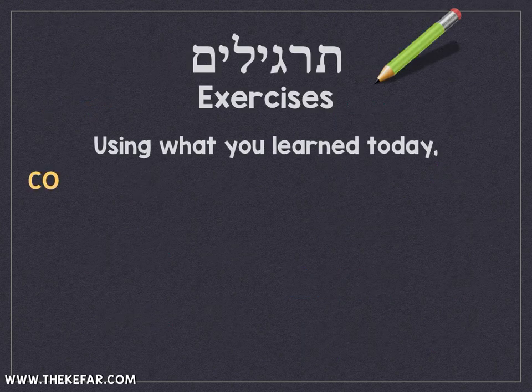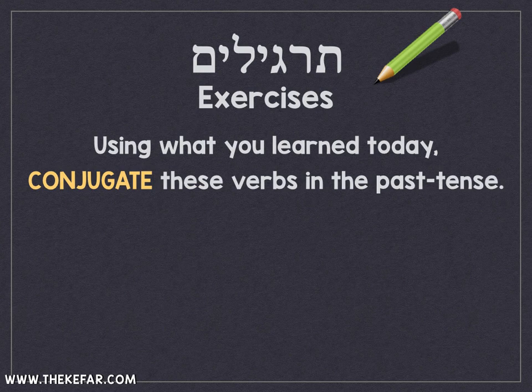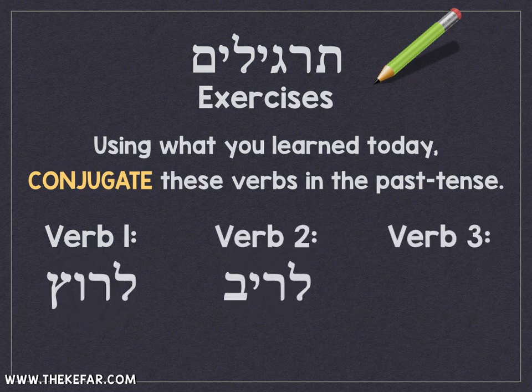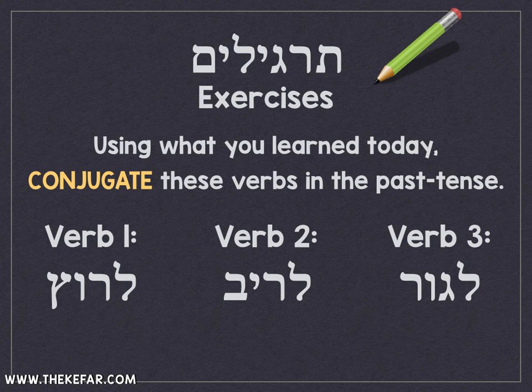Your exercises are to use what you've learned to conjugate these three verbs in the past tense: la-rut, which means 'to run'; la-riv, which is 'to fight or argue'; and la-gur, which is 'to live' — not to live life, but to live in a location. Like ani gara be-North Carolina — I live in North Carolina. When you get rid of the lamed and either the vav or yod in the middle, you'll have just one 'ah' sound instead of two. The masculine and feminine present tense will match hu and he in the past tense.